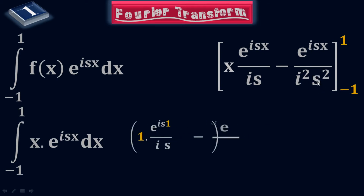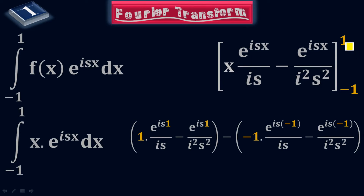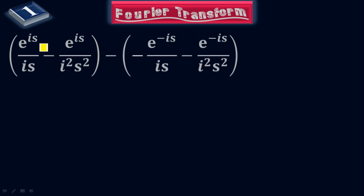Now plug in the values of the limits. First put the upper limit x = 1, giving 1·e^(is)/(is) minus e^(is)/(i²s²). Then minus the lower limit x = −1, giving (−1)·e^(−is)/(is) minus e^(−is)/(i²s²). After simplification we have: e^(is)/(is) − e^(is)/(i²s²) − (−e^(−is)/(is) − e^(−is)/(i²s²)).